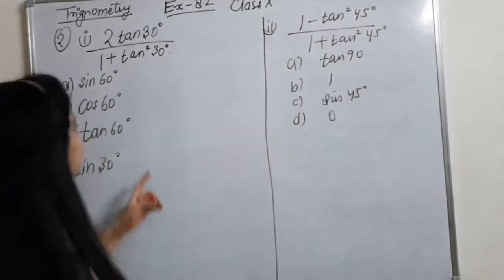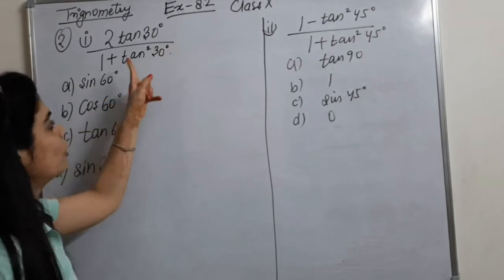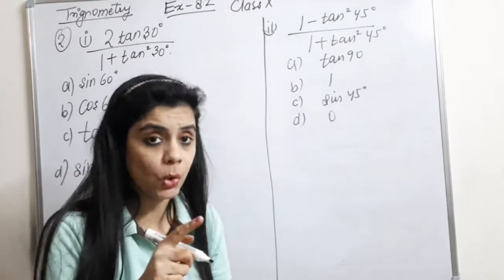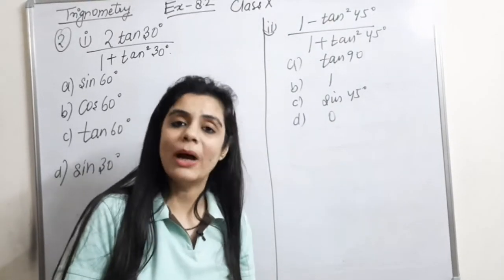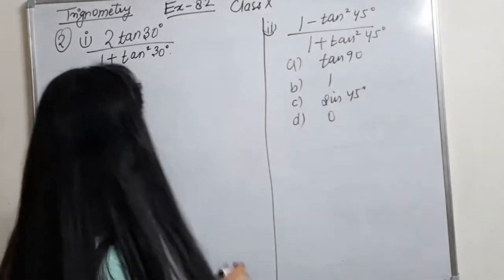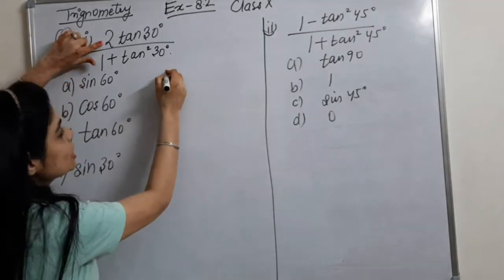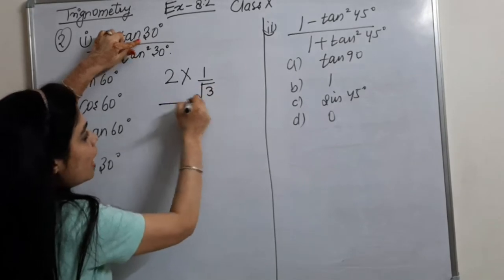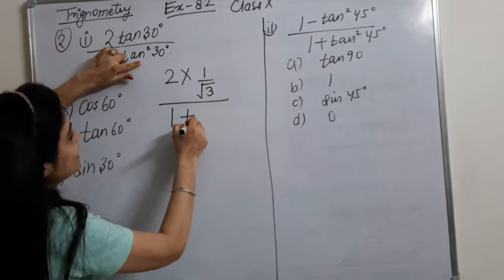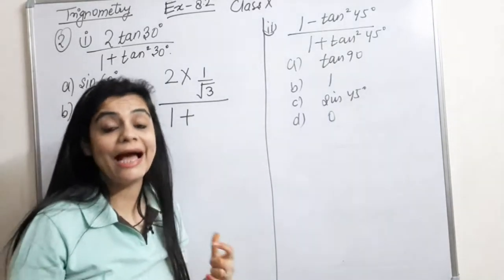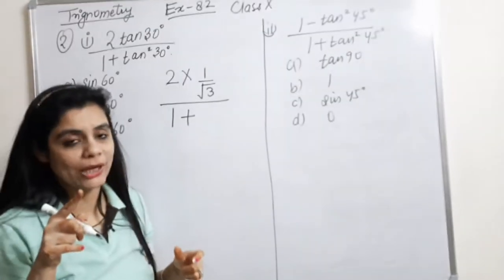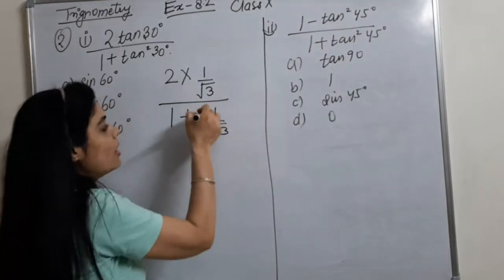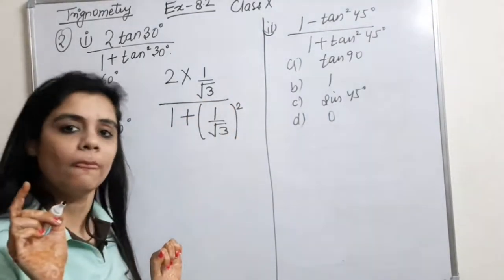The second question, first part: 2tan30 upon 1 plus tan²30 degree. What is tan30? Tan0 is 0. Tan30 is 1 upon root 3. If I solve this on the side, then in place of tan30 I write 1 by root 3. Tan square 30 means first think what is tan30? It is 1 upon root 3. So write 1 upon root 3 and square it.